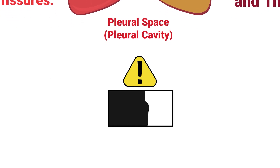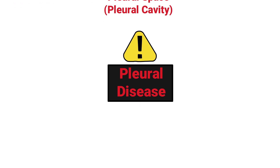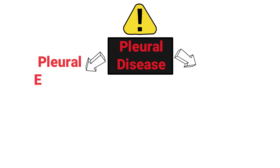Any condition that impacts the pleura can be classified as a pleural disease. There are two primary diseases that occur in the pleural space: pleural effusion and pneumothorax.